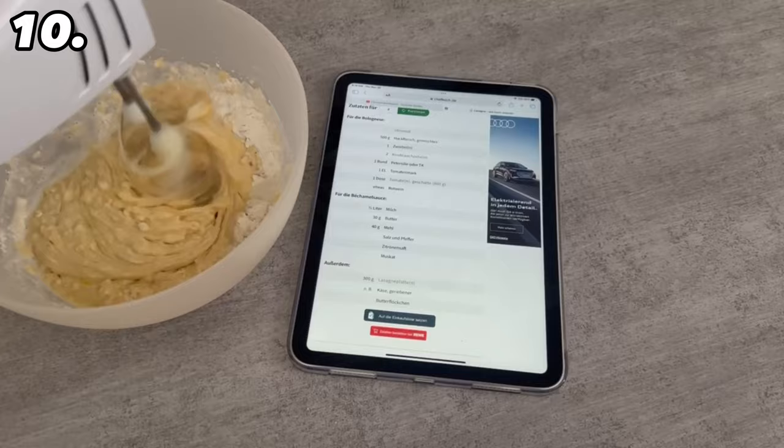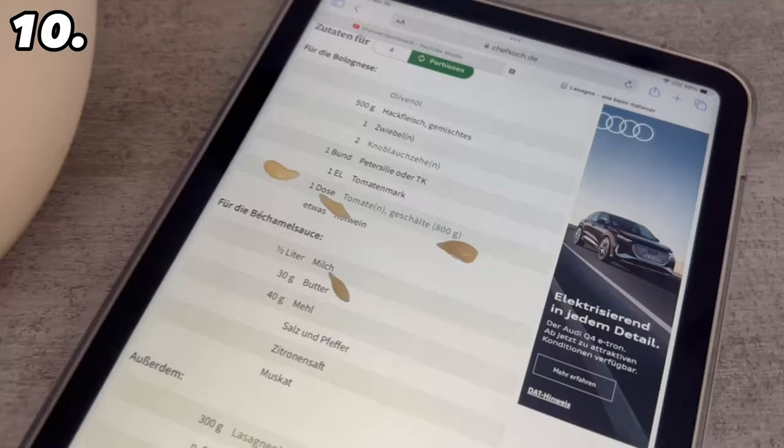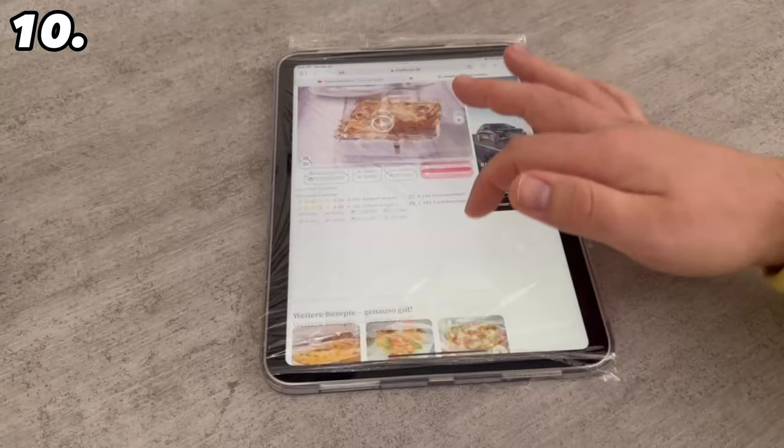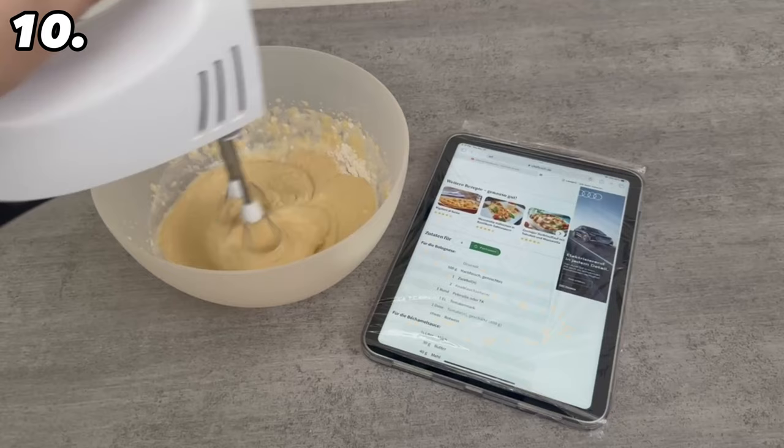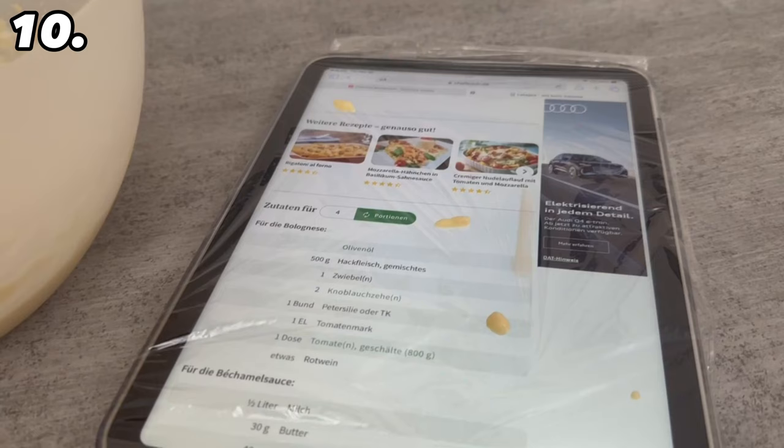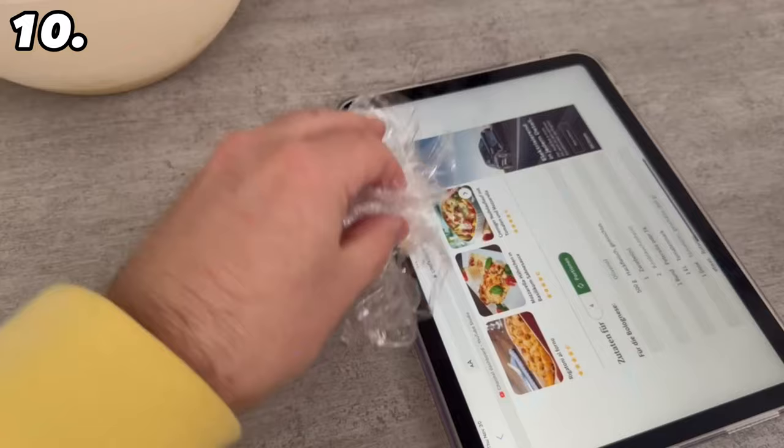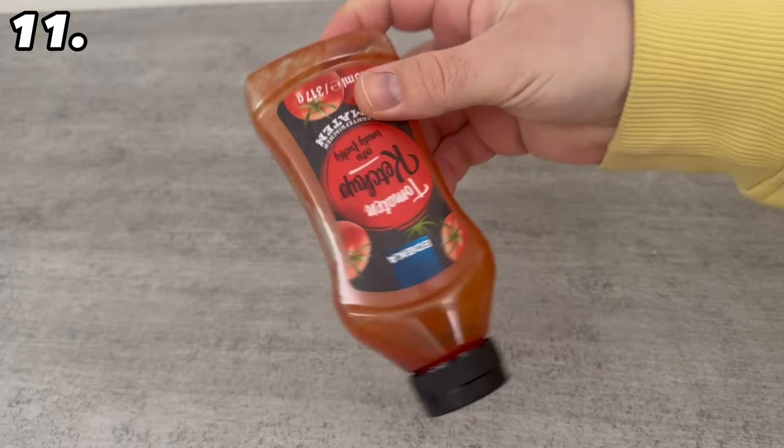If you're cooking or baking a recipe from the internet, you're probably using your phone or tablet for the recipe. But then you've surely had the problem of it getting dirty. Instead you should lay a small piece of cling film over it. You can still use it as usual, but now if you spill something it's not a big deal because you can simply peel off the film and dispose of it at the end. And so your device didn't get dirty and you could save yourself the cleaning here.